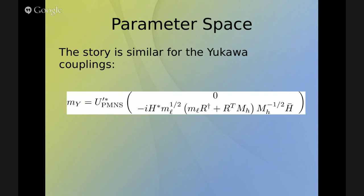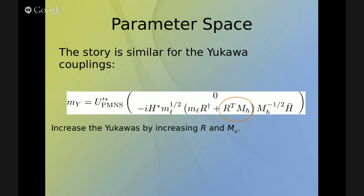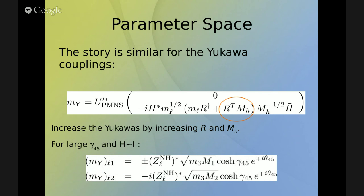The story is the same for the Yukawa couplings. One can rebuild them and see they have a specific shape. If we want to increase the size of the Yukawa couplings, we need either to increase the heavy masses or increase the parameters within the R matrix. Since we want to keep MH small enough, what we need to do is increase R by increasing gamma_45. So our objective from now on is to maximize gamma_45.